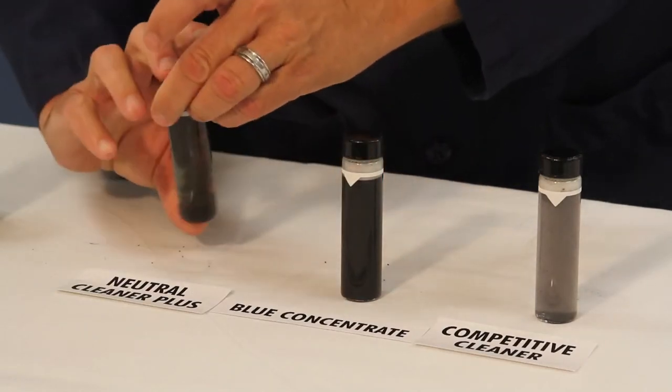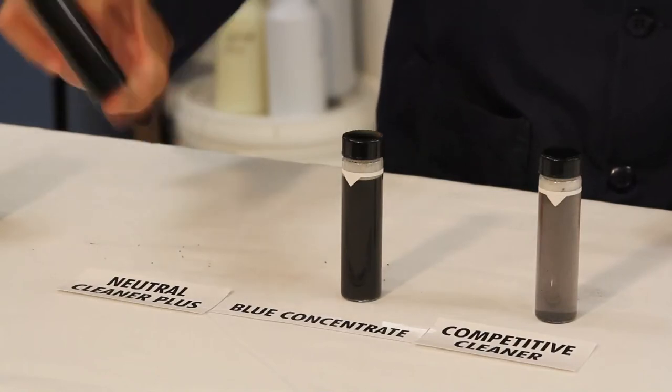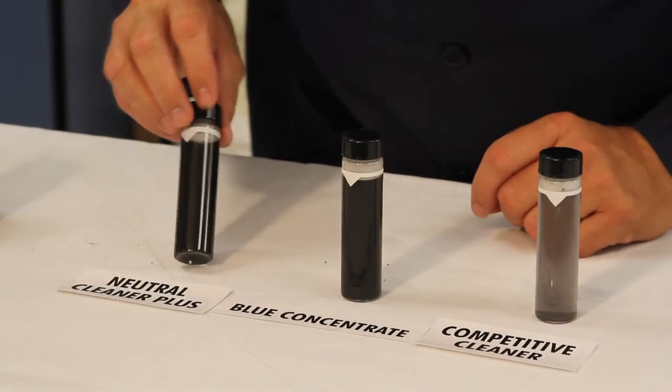Neutral cleaner plus, as we shake it up, you'll see it turns black just like the blue concentrate, so it's suspending the solution and emulsifying it so we can pick it up with our mop.